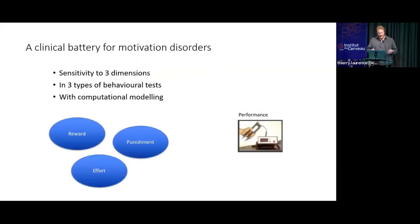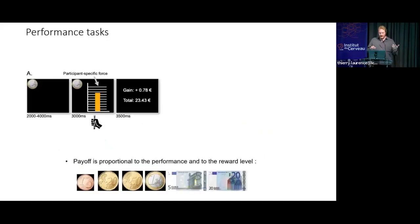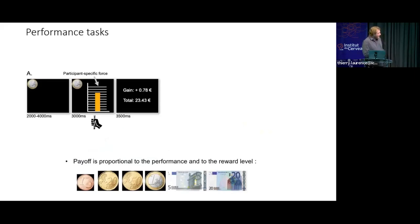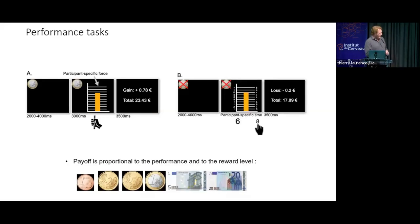For the preference task, it's all declarative — you just ask the subject; you don't ask them to actually do an effort. So we used a second type of task in the same participants: performance tasks, in which you ask participants to do an effort to get a reward — for example, to squeeze a grip, like we saw yesterday, to get some money. The payoff is proportional both to the maximal force you produce and the reward at stake. We have a motor version and a cognitive version, in which instead of squeezing a grip you resolve a series of numeric strokes as fast as possible, and the faster you are the more money you win.